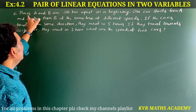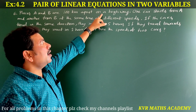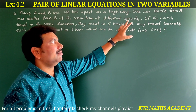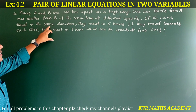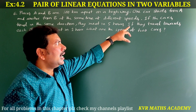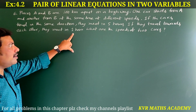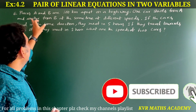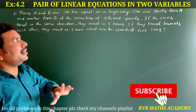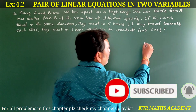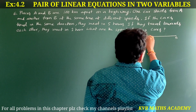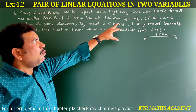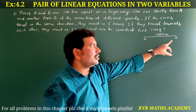Next question: Places A and B are 100 kilometers apart on a highway. One car starts from A and another from B at the same time at different speeds. If the cars travel in the same direction they meet in 5 hours. If they travel towards each other they meet in 1 hour. What are the speeds of the two cars?